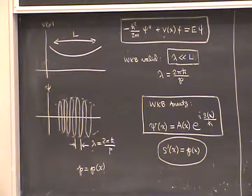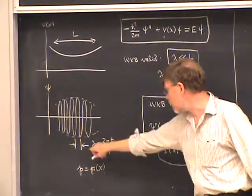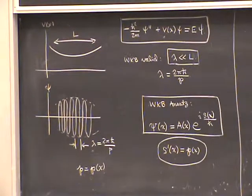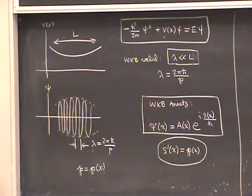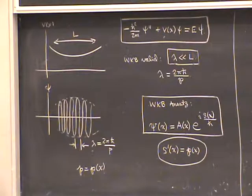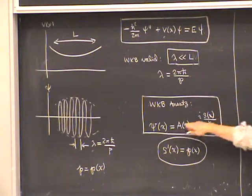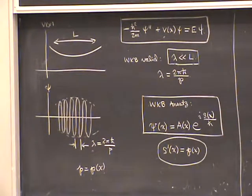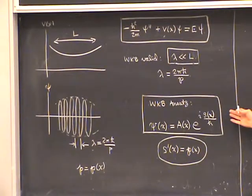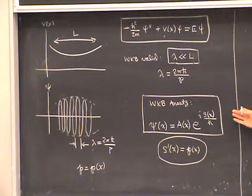Pay attention to this function p(x), because it's being defined here in terms of the local de Broglie wavelength of the quantum wave, but it also has a classical interpretation which is going to come out in a minute. The WKB ansatz by itself is not a systematic expansion in powers of h-bar — it's rather just something we wrote down by intuition by looking at a picture. However, we can put it into the form of a systematic expansion, which clarifies the structure of the theory.